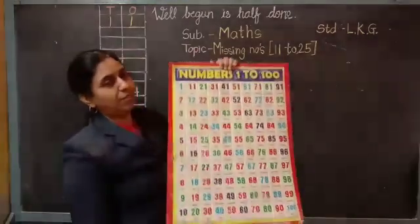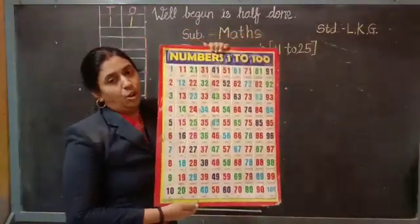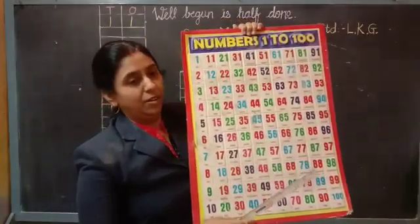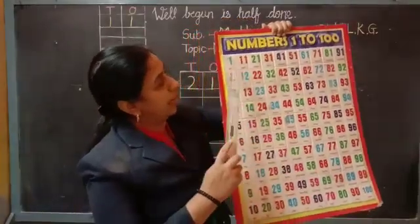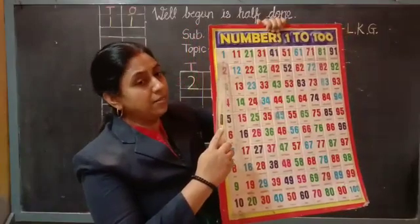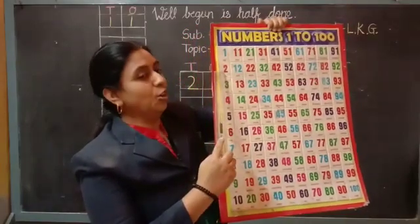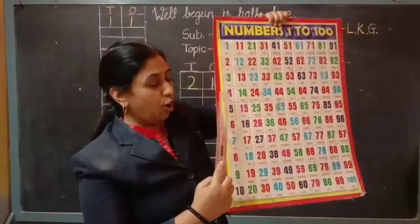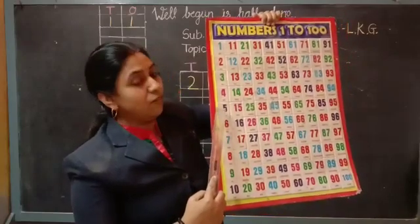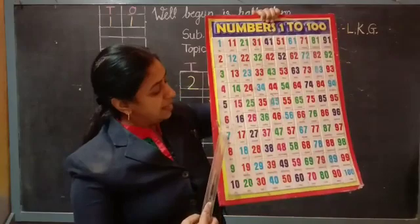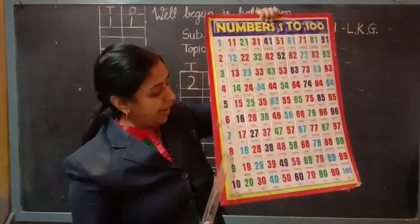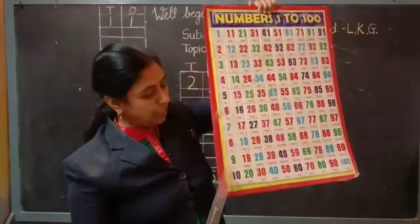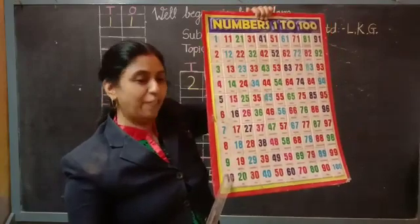Look here. All of you, count with me. Say 1, 2, 3, 4, 5, 6, 7, 8, 9, 1-0, 10. Very good.